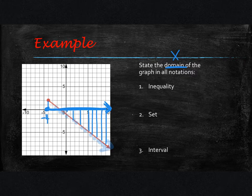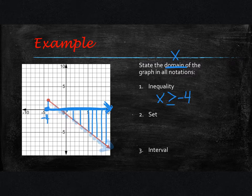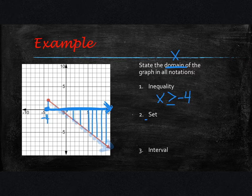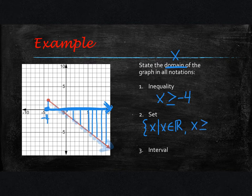It's everything to the right of negative 4. Going to the right, the numbers are getting larger, so we write that it's all x values greater than negative 4. Since there is a solid point, it's going to be greater than or equal to — and that's your inequality notation. For set notation, we add the stuff at the beginning: the curly parentheses, x such that x is an element of all real numbers, comma, x is greater than or equal to negative 4, then close with the curly parentheses.